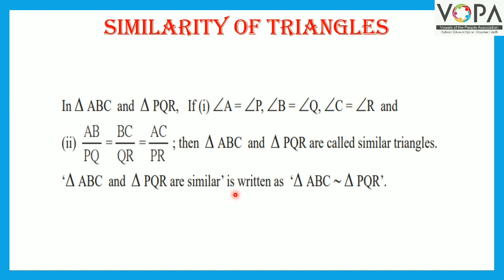Triangle ABC similar to triangle PQR is written as triangle ABC ~ triangle PQR. This is the symbol of similarity.